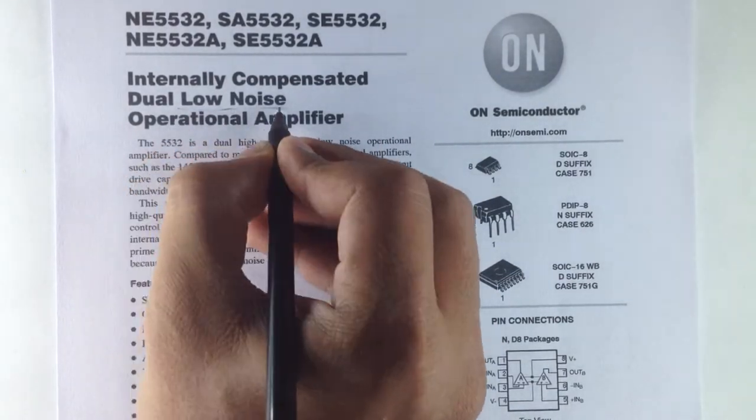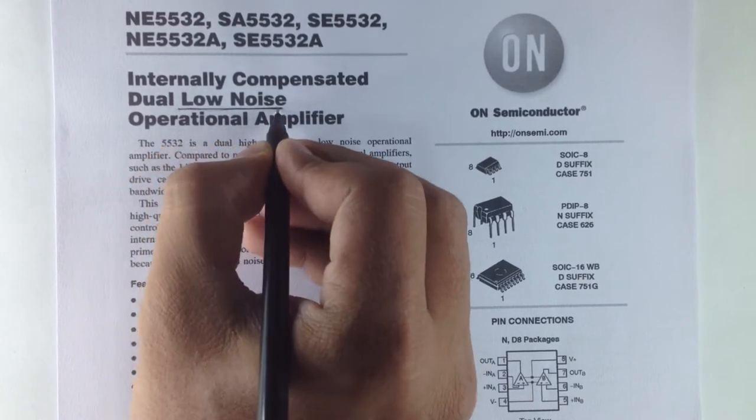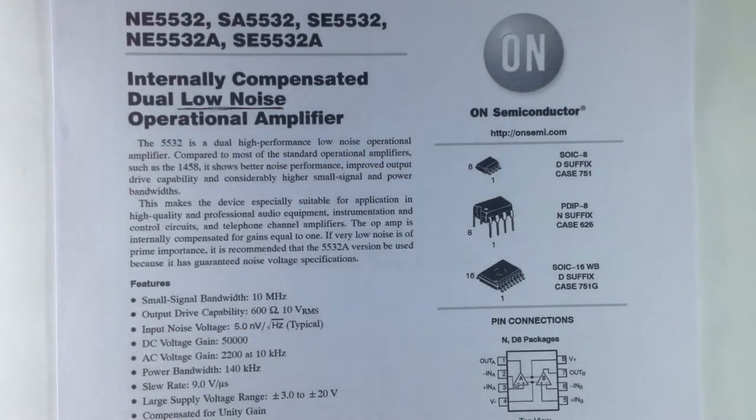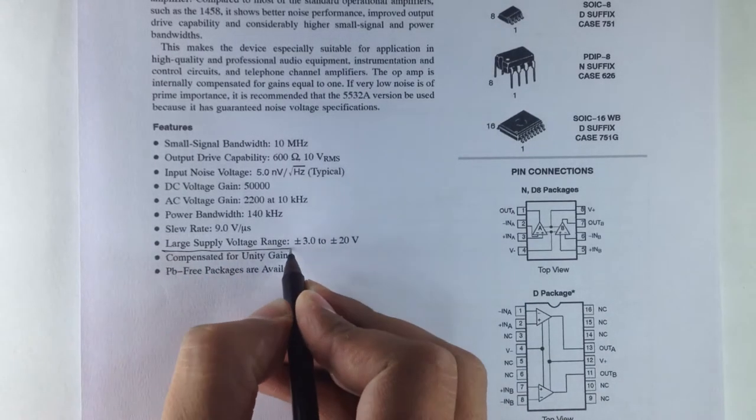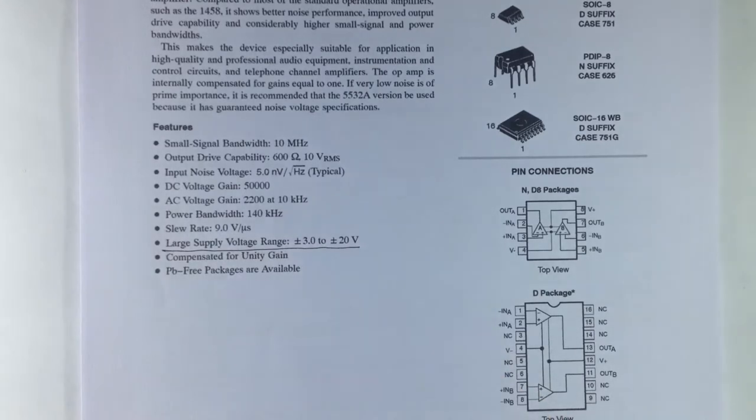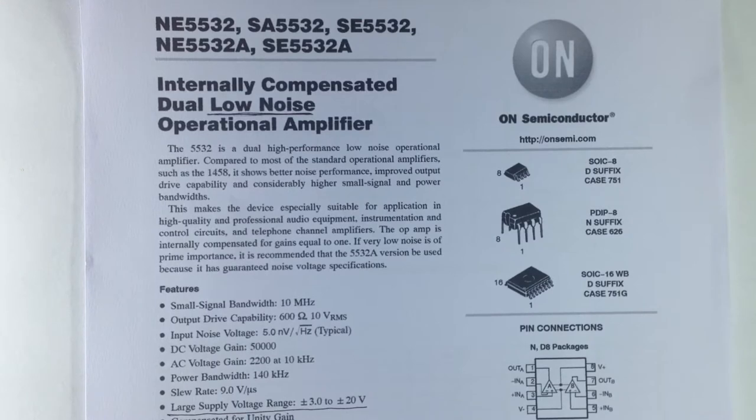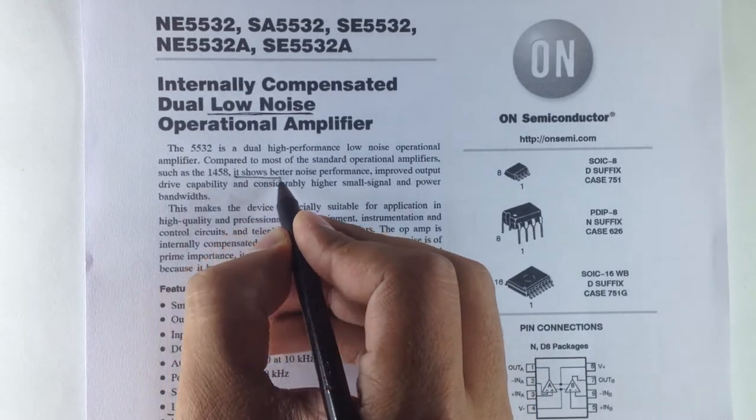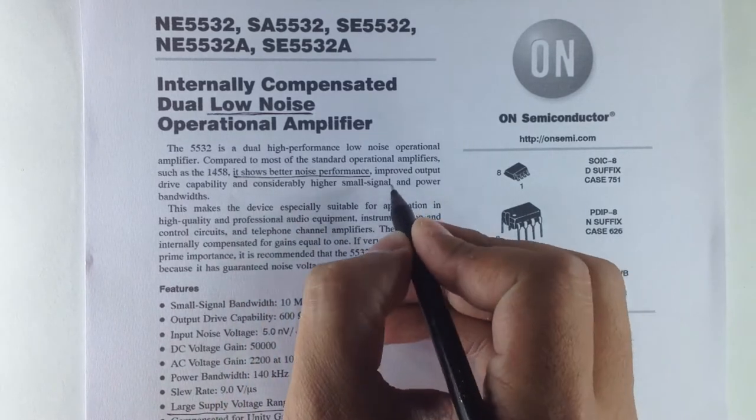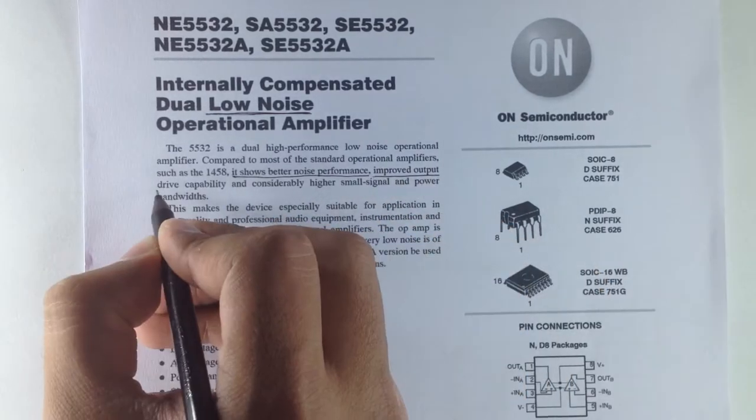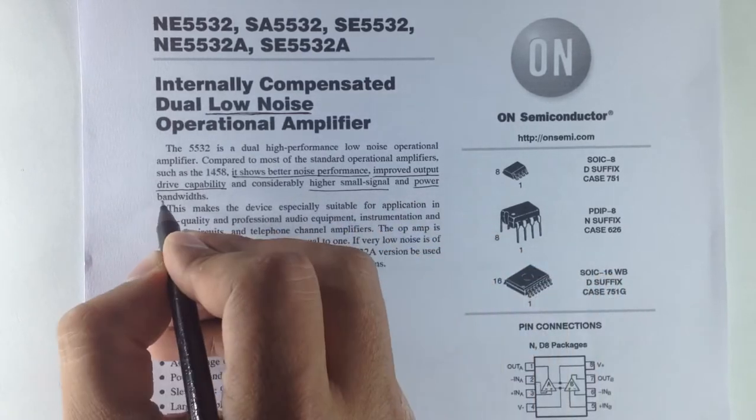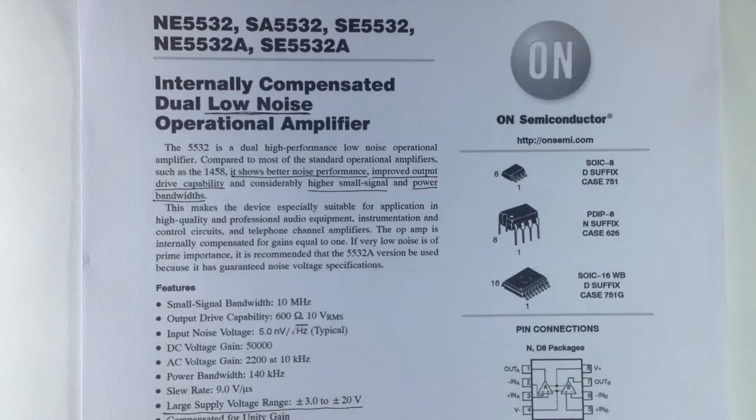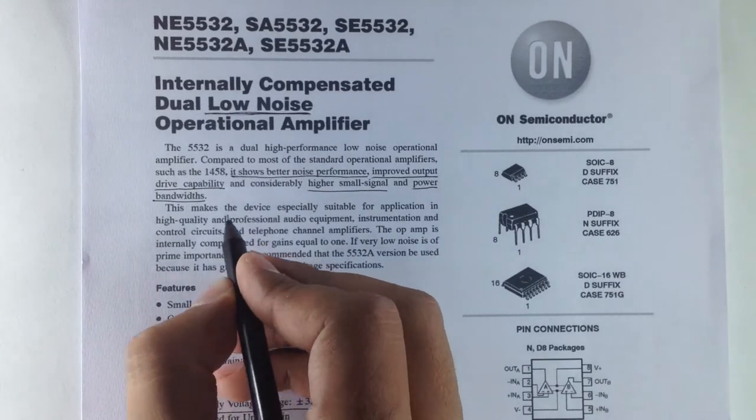The reason why I chose a NE5532 IC is because it is a low noise op-amp which is suitable for this application. It has a large supply voltage range, that is from 3 volts DC to 20 volts DC. The datasheet also mentions that it shows better noise performance and has an improved output drive capability. This makes the device especially suitable for application in high quality and professional audio equipment.